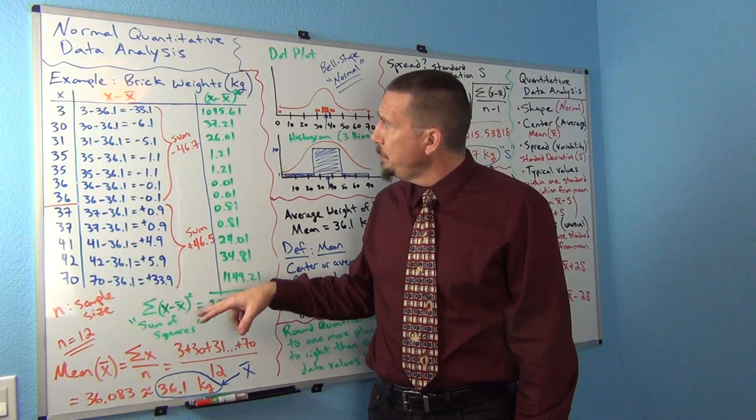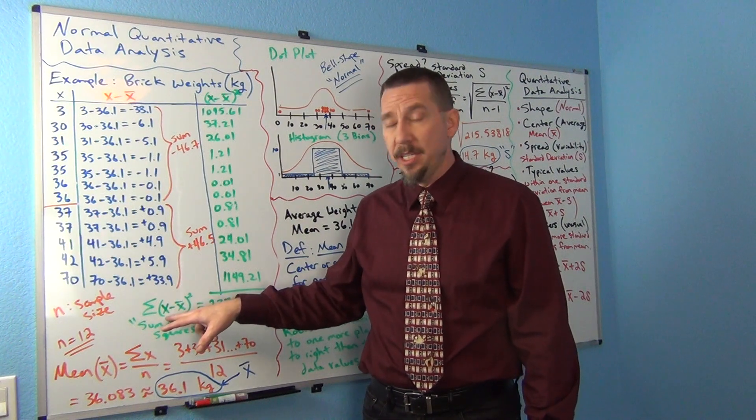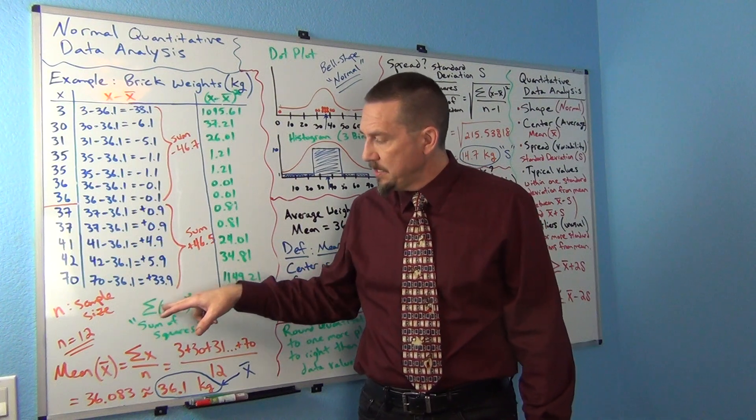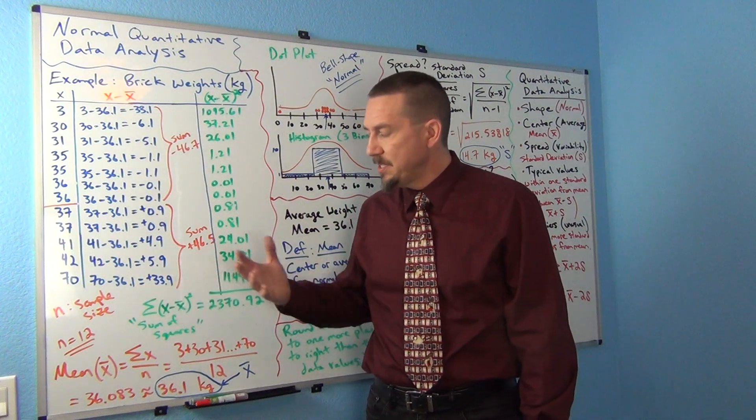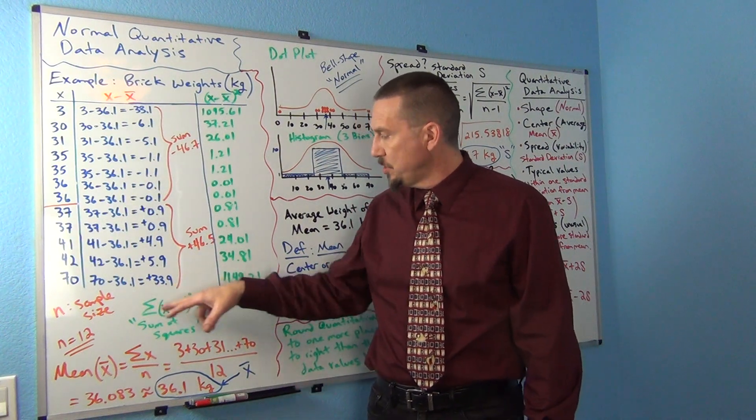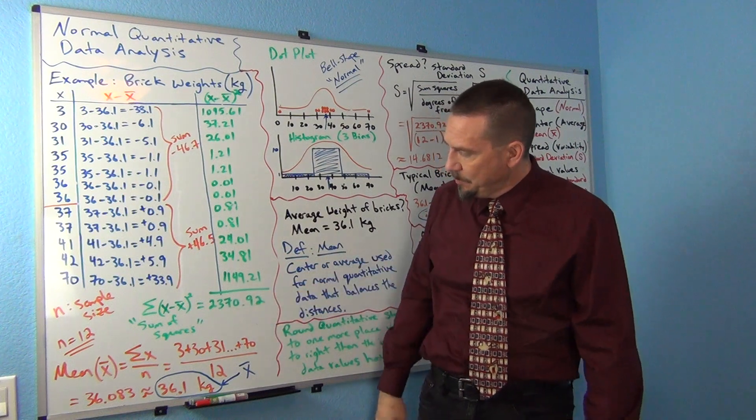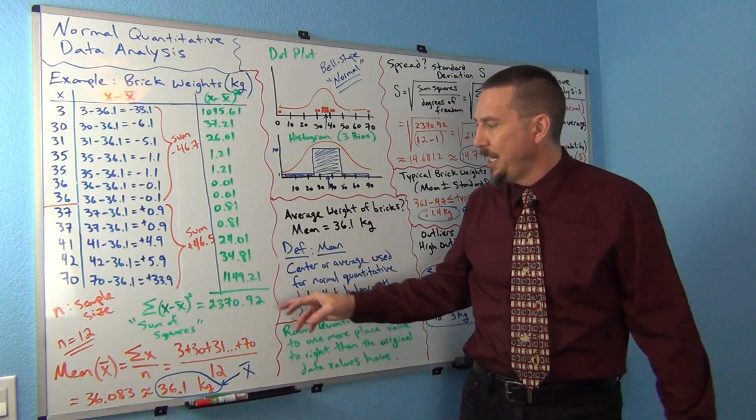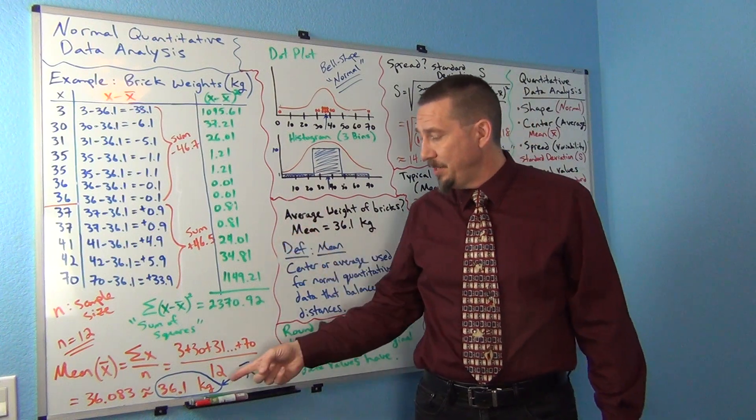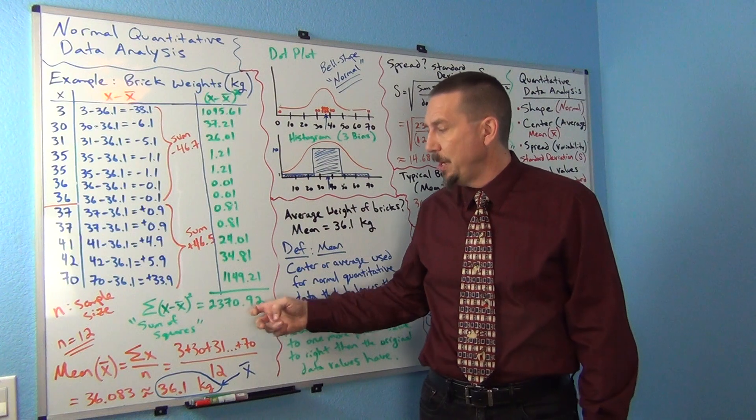The formula would be Σ(x - x̄)². The x is the number in the data set minus the mean, and you're squaring it. This summation notation means add it up. So this just means add up the squares. If we add up all these squares, we get 2370.92. Now, my numbers are off a little bit because I rounded a lot. I'm going to have some rounding error in my overall answer.